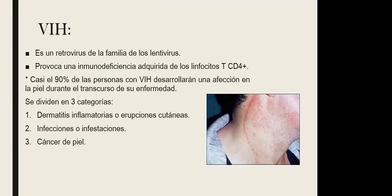Hay dos tipos de VIH: VIH-1 y VIH-2. El VIH-1 es al que nos vamos a referir porque tiene una distribución mundial, es decir, es el más común a nivel mundial. Mientras que el VIH-2, a pesar de que es más virulento, probablemente por esa misma razón solamente se encuentra en la zona de África.